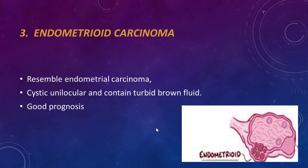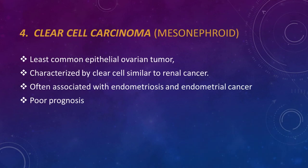Endometrioid carcinoma resembles endometrial cancer, like adenocarcinoma of the uterus. It is cystic, unilocular, and contains turbid brown fluid similar to chocolate material. This tumor usually has a good prognosis.